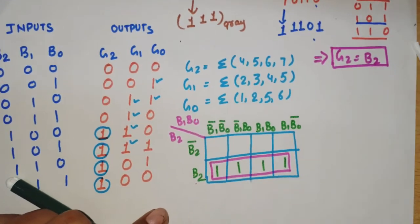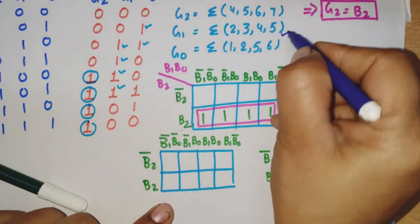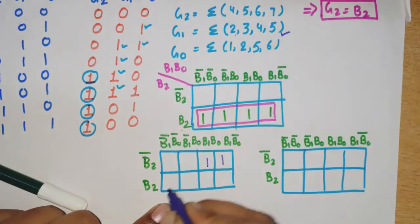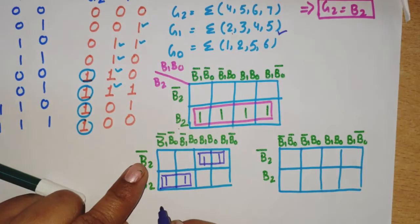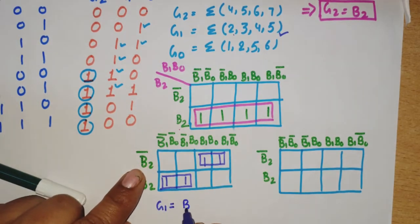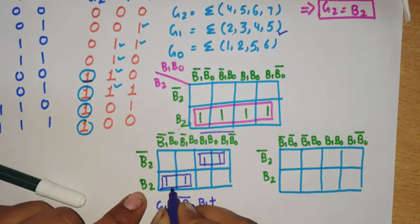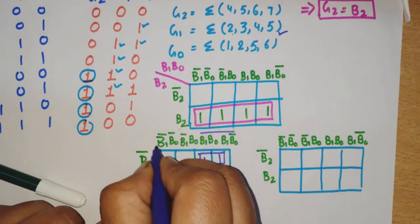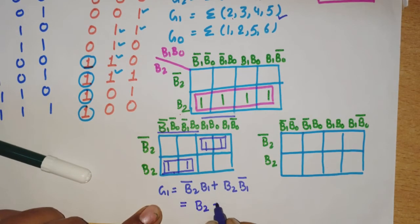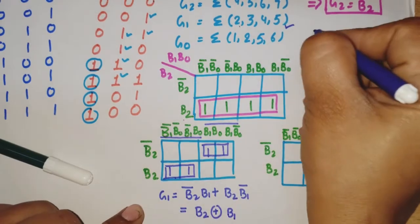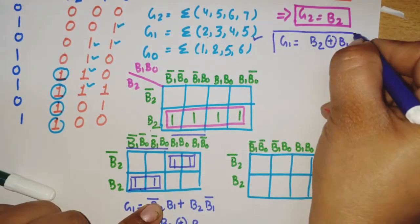Now for G1, drawing the K-map and placing minterms 2, 3, 4, 5. Two pairs are possible. For the first pair, the row gives B2-bar and common column value is B1. For the second pair, the row is B2 and common value is B1-bar. This gives G1 = B2-bar·B1 + B2·B1-bar, which is the expression for XOR. Therefore, G1 equals B2 XOR B1.